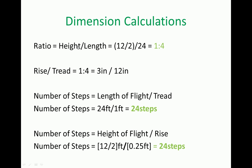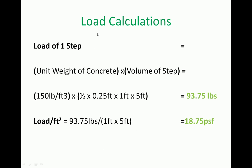For dimension calculation, the ratio of height to length is 12 by 2 for two flights. The total height divided by two gives the length. The ratio is 1:4 — rise to tread. The rise is set at three inches. Number of steps equals the length of the flight divided by the tread, and the height of the flight divided by the rise gives 24 steps.